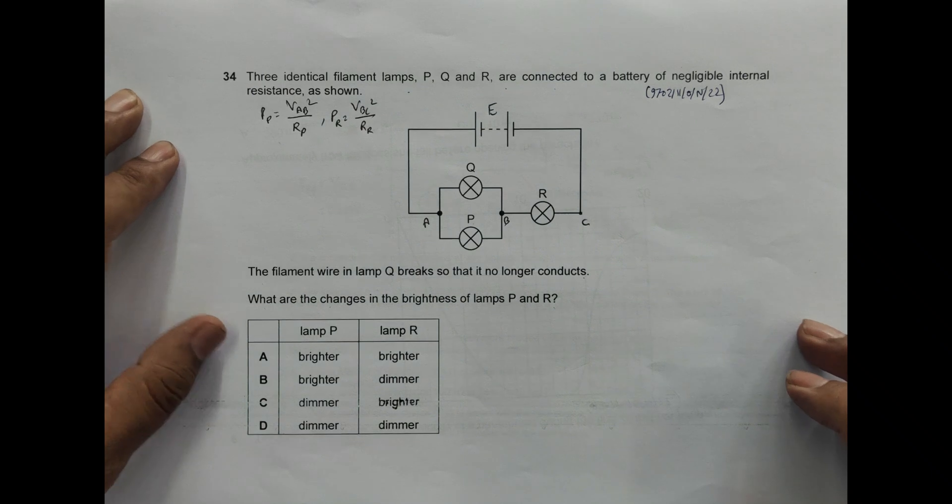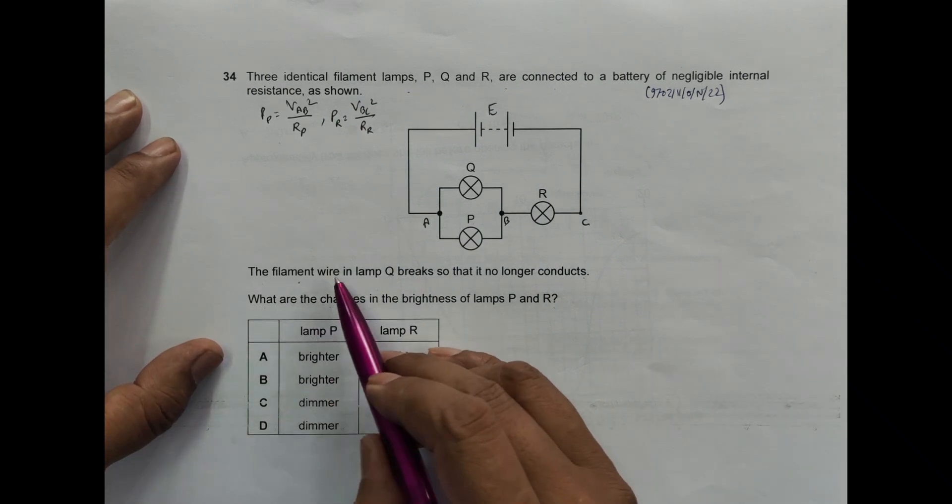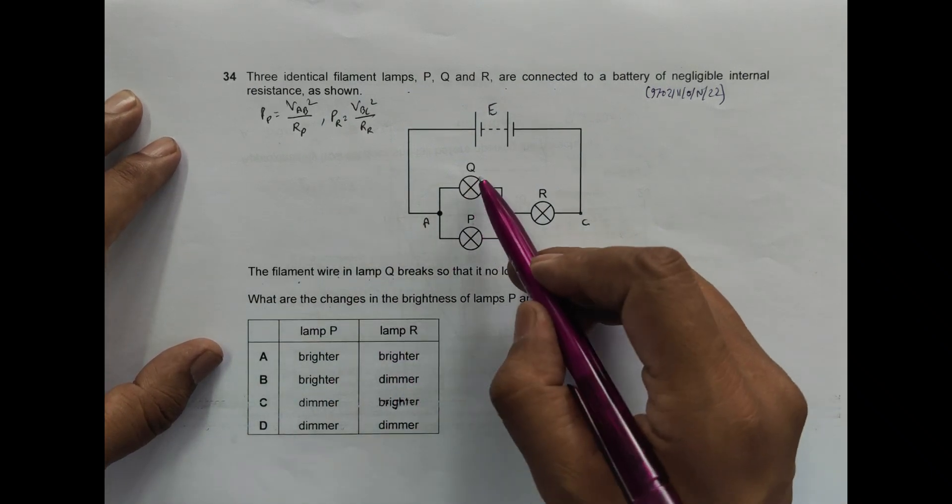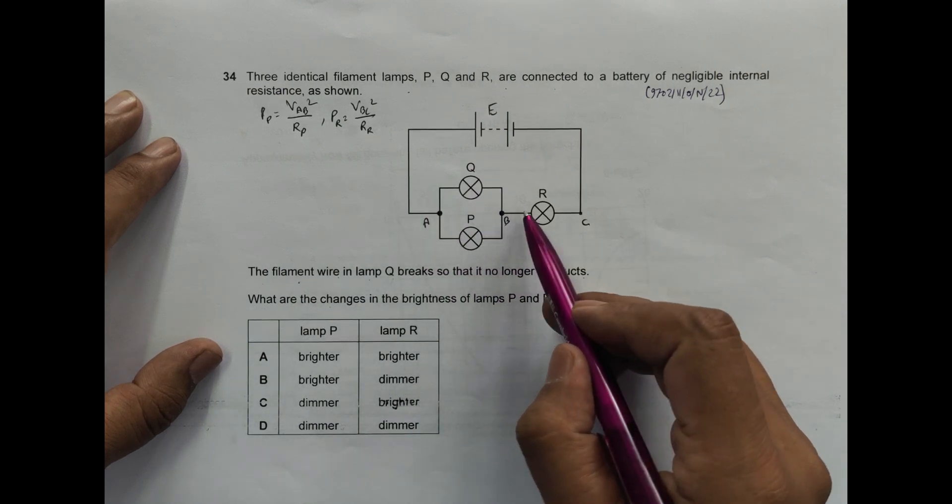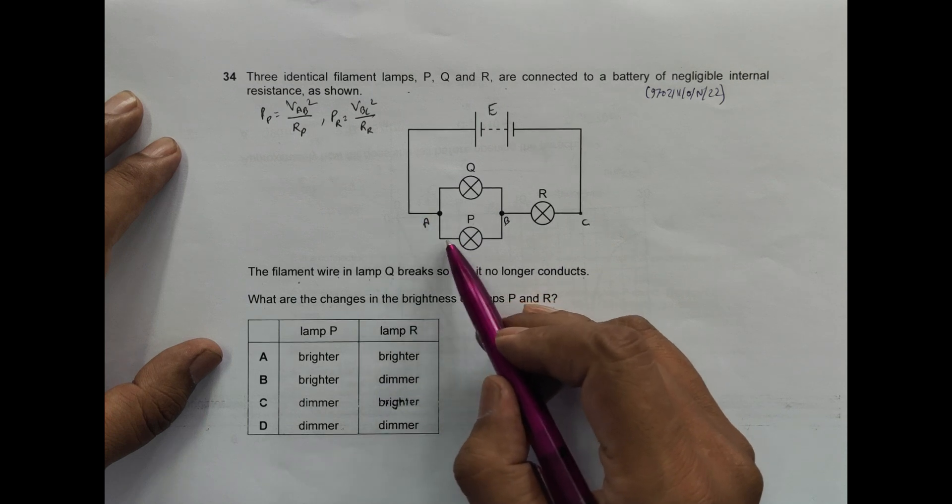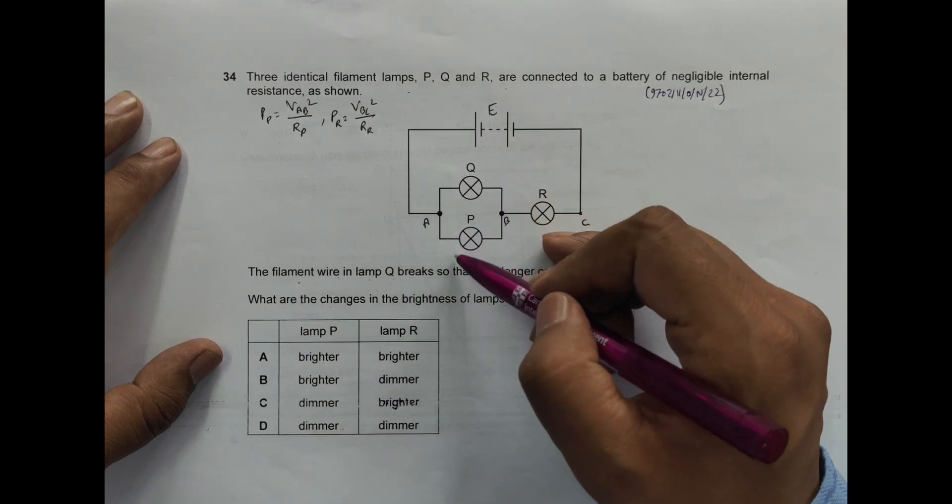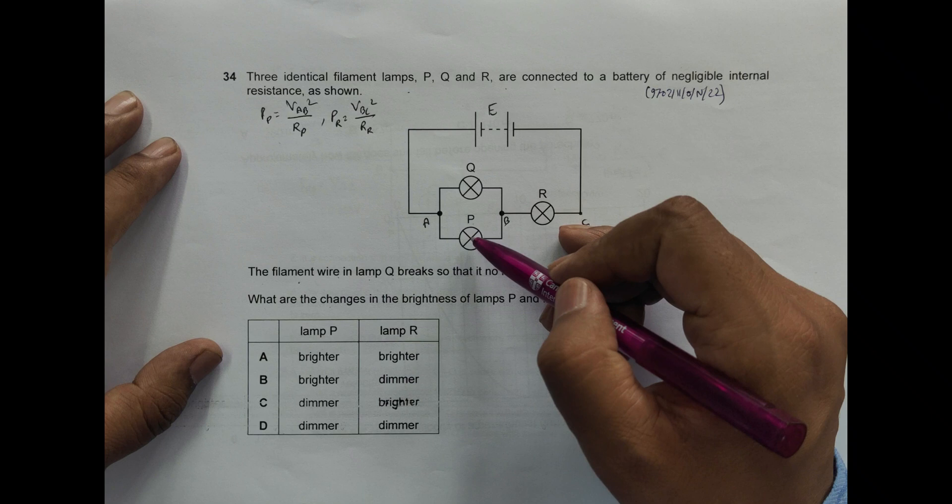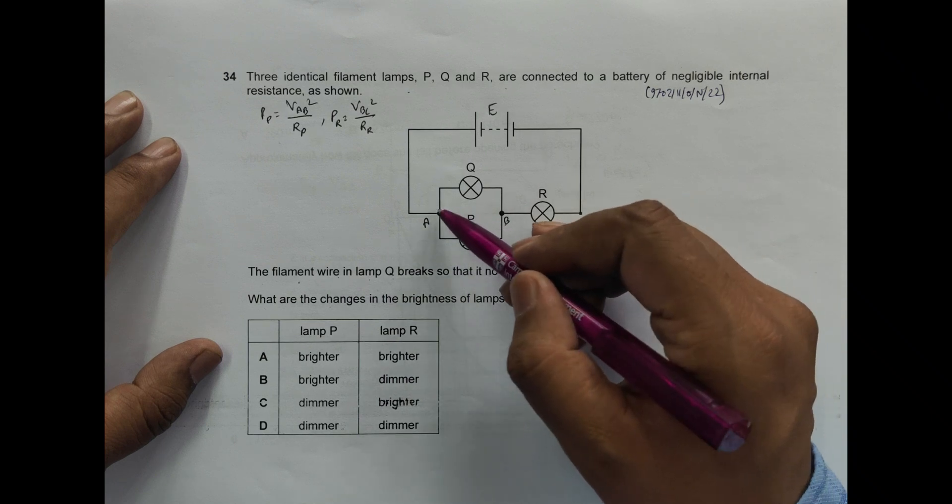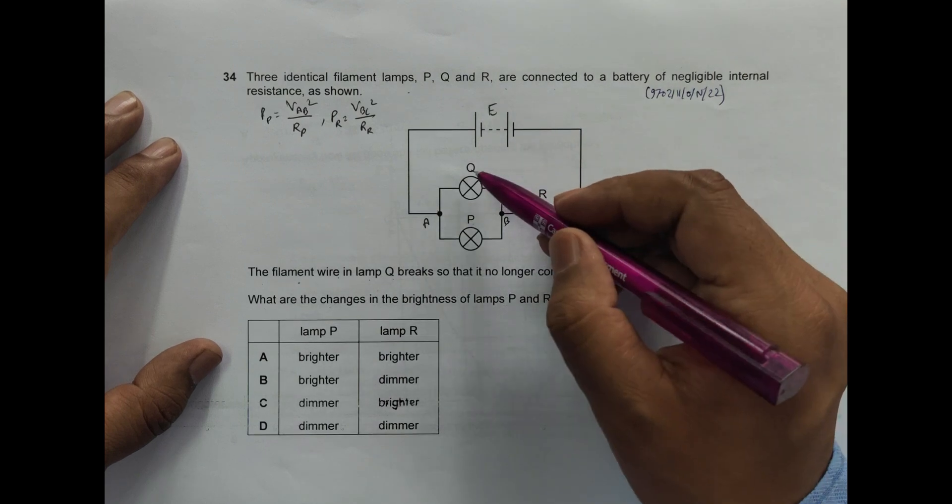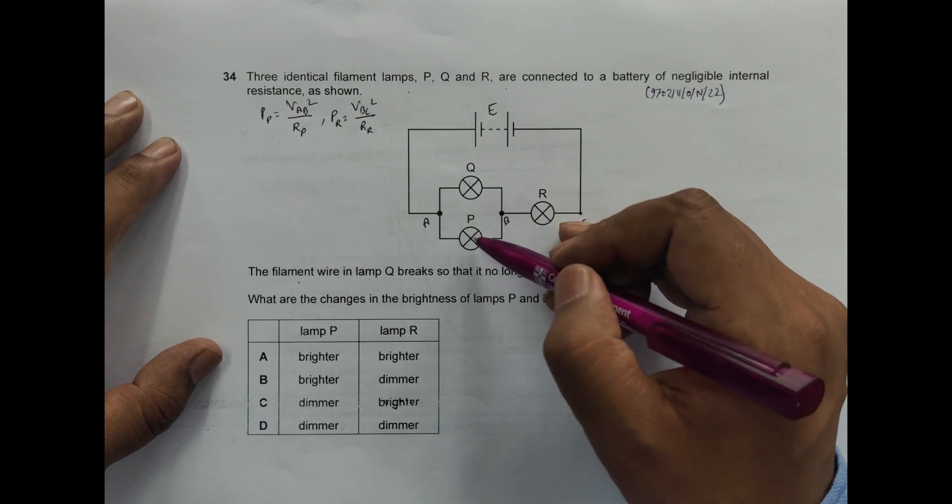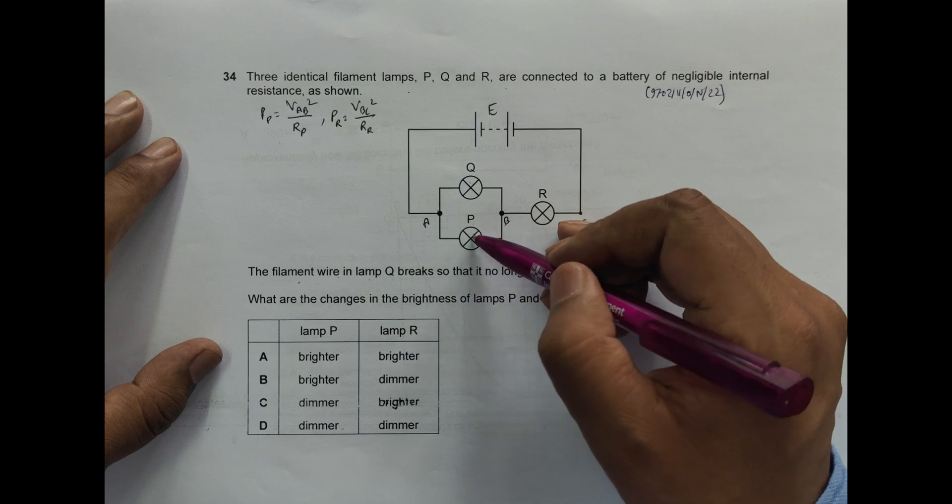Now the filament wire in lamp Q breaks, so this thing breaks. If this thing breaks, current will flow along this only. It means that initially there was parallel arrangement and now there is only single arrangement. So that's why the total R increases. Initially there was parallel of two resistances, now there is only one single.